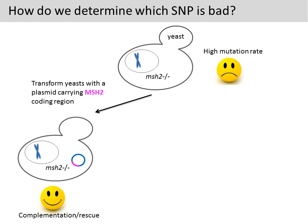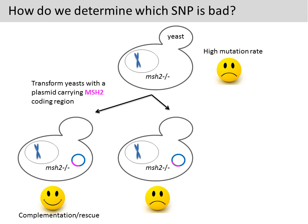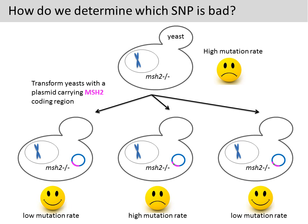Instead of introducing the wild-type MSH2 into the yeast, we can also introduce an MSH2 gene that carries a SNP, indicated by a small green speckle. If the SNP abolished MSH2 function, we won't be able to rescue the mutant yeast and the mutation rate will remain high. If the SNP has no effect on MSH2 function, we will observe a lower mutation rate similar to the wild-type. Therefore, we will be able to determine whether a SNP affects the function of MSH2.